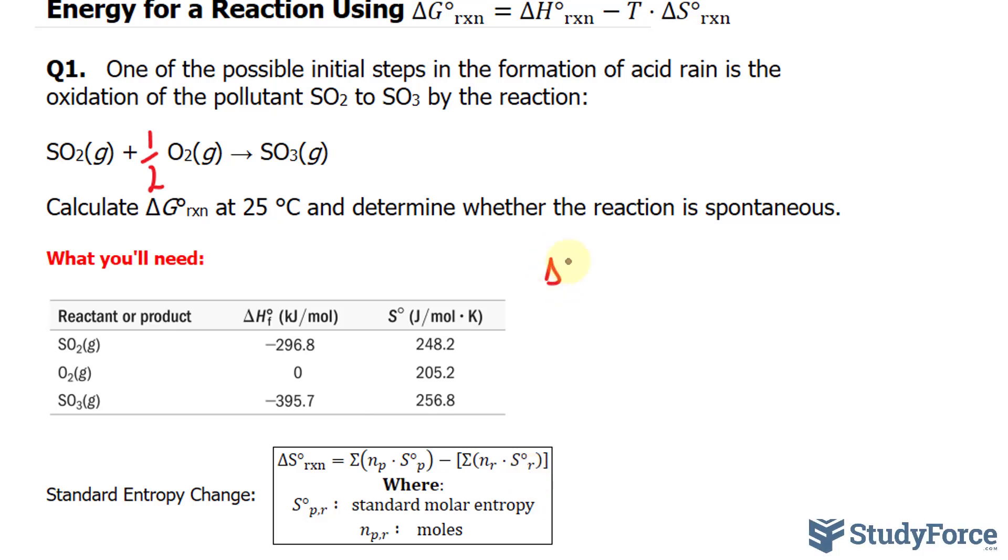I'll write down the standard entropy change for the reaction is equal to - this part is the sum of the standard molar entropy for the molecules found in the products, and it's being multiplied by n where n represents the number of moles. We have 1 mole here, so I'll write down 1 mole times, using the information found in this table, SO3 has a standard molar entropy of 256.8 joules per mole times Kelvin. Notice that the mole units will cancel out, leaving you with joules over Kelvin.